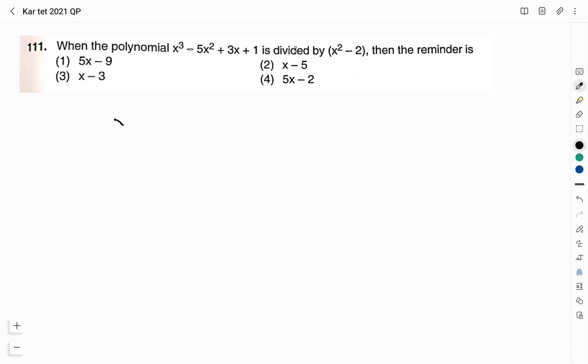We are given with the polynomial x cube minus 5x square plus 3x plus 1. Now, this has to be divided by x square minus 2. We have to consider the first term of the polynomial x cube and the first term of the divisor, it is x square. We get x, so that x we will write as quotient. Multiply it.